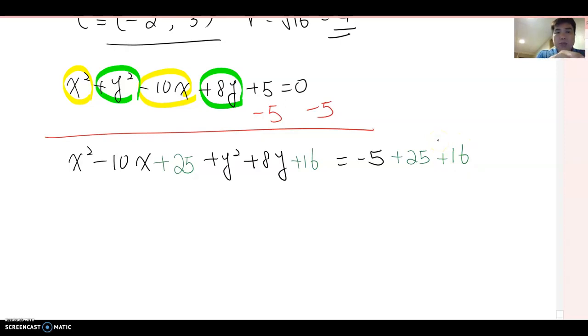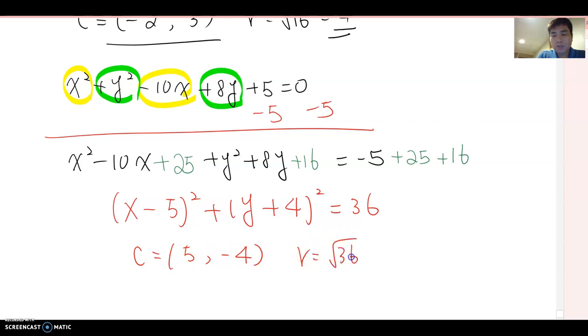Now you are factoring out and simplify also constant value, then this becomes (x-5)² + (y+4)² = 36. Therefore, center we can find (5, -4), radius, √36 becomes 6 here.